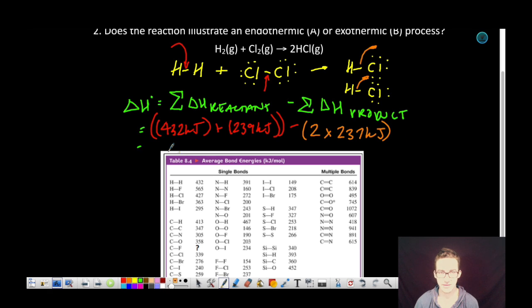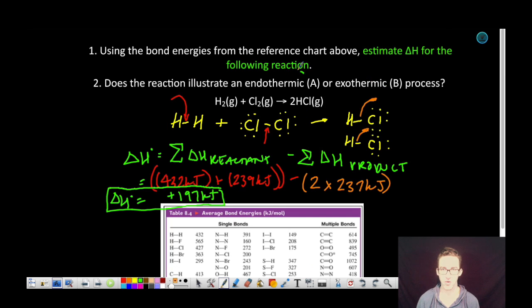And a quick calculator time should end us up with a positive 197 kilojoule enthalpy change for this reaction, which implies that we are talking about an endothermic process. In other words, it takes more energy to break those bonds in the reactant molecules than is released in the formation of those new bonds in the product molecules.